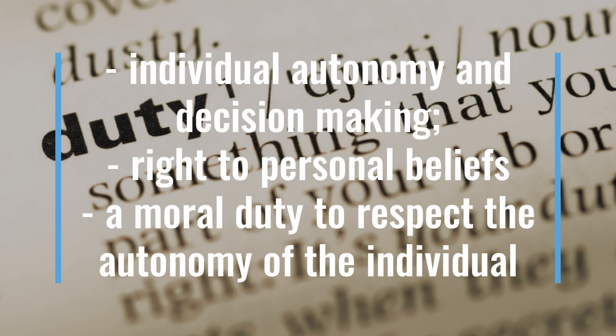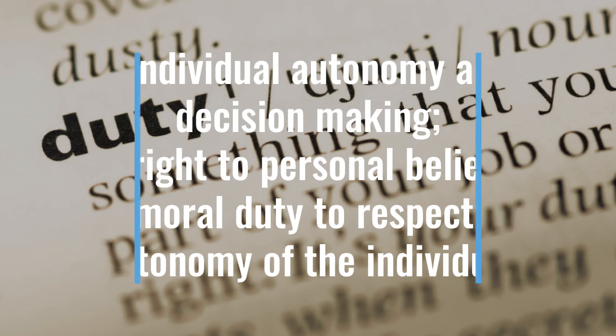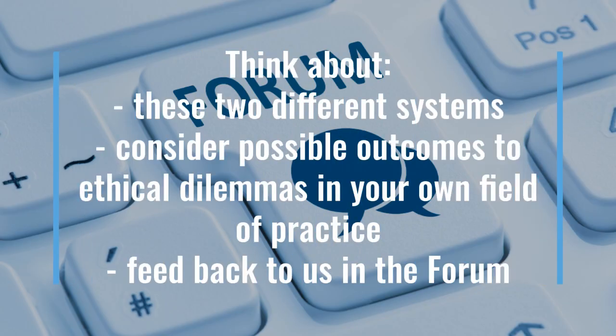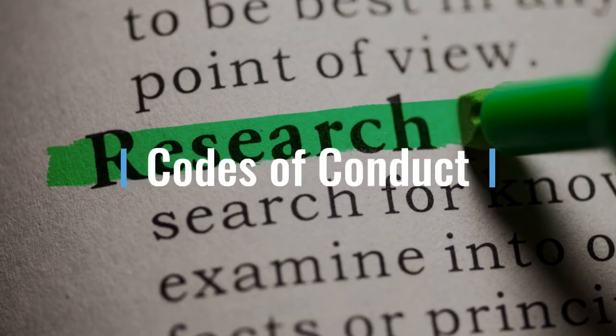To share your learning on these points, think about these two very different ethical systems and try to apply them both from their two different starting points and outcomes to particular issues within your own field of practice. Share that learning with the rest of us — if not in class, then certainly in the online forum. If utilitarianism or deontology tend to inform so many social codes of ethics or personal moral belief systems, what role do you think our professional codes of conduct can play, especially in relation to health and social care research?